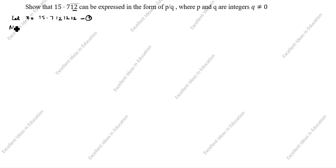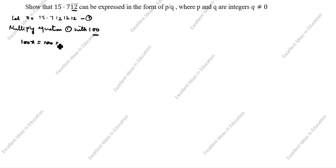What is given in this question — we will take x is equal to 15.71212... (two digit bar), so 1212 — this is the first equation. We multiply equation 1 by 100 (two digit zeros), so 100x is equal to 100 into x, which gives 100x is equal to 1571.2121... — this is the second equation.